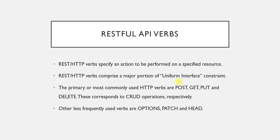This is what uniform interface means. Whenever you create your own RESTful API you have to follow this constraint. As a developer, you can technically alter the code — you could write resource-creation code under GET or resource-reading code under POST — but as I said, we must follow this constraint. Whenever you want to read something, you should use the GET method only.